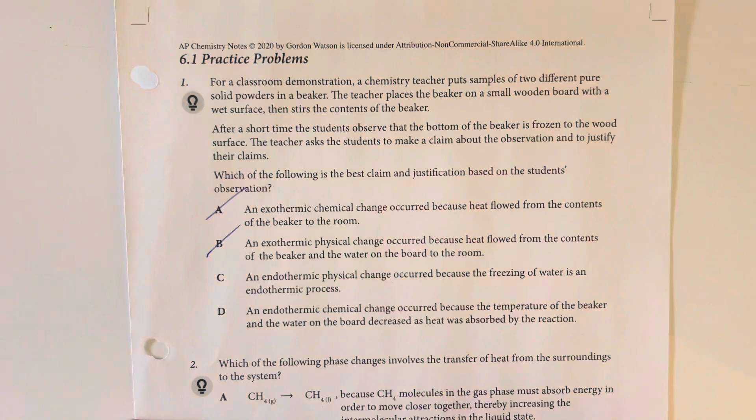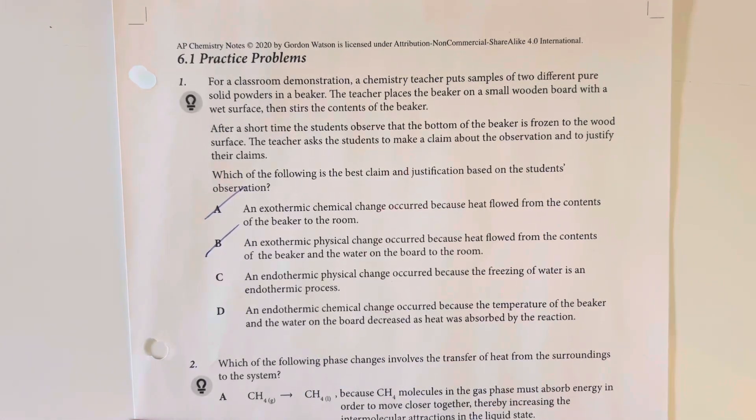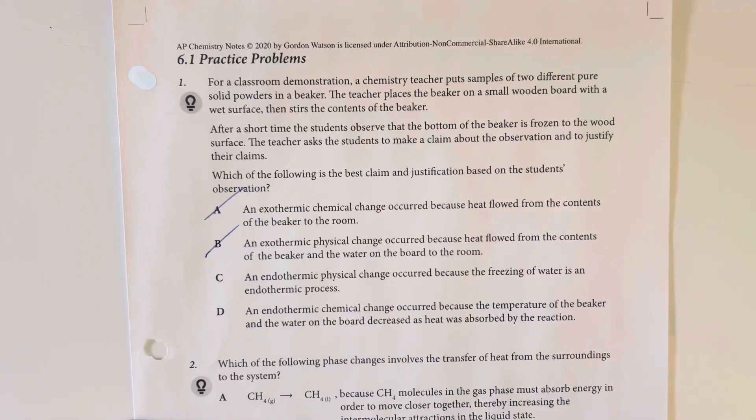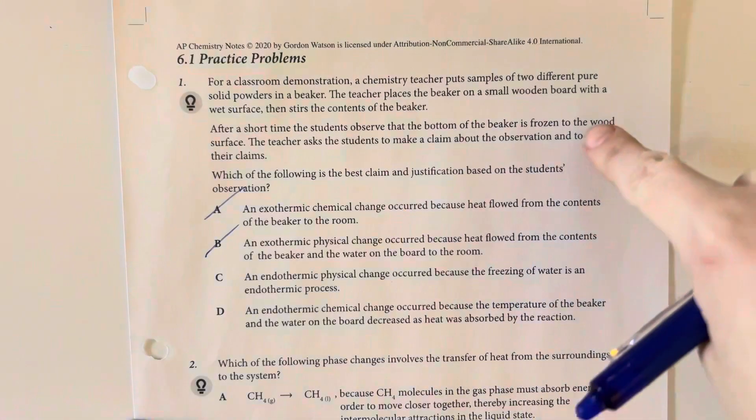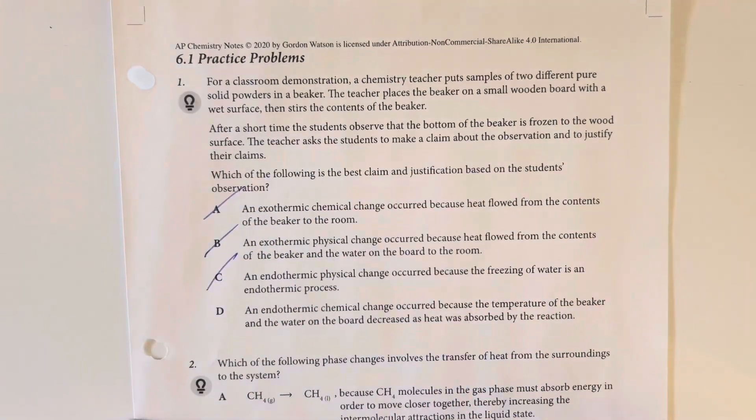And then we are going to read these two and see which one is better. So C says an endothermic physical change occurred because the freezing of water is an endothermic process. The freezing of water is an exothermic process. And two, this is not just a physical change. A temperature change is an indicator of a reaction taking place. So C does not make any sense.